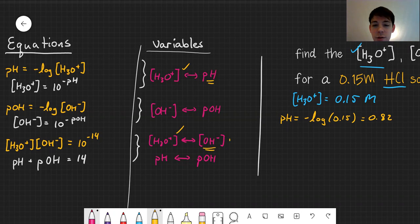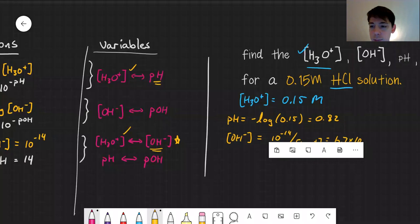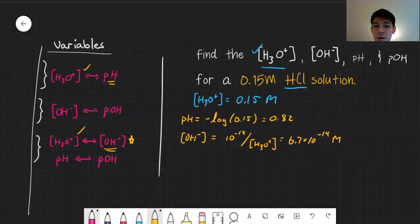Next, I'm going to use this expression. Knowing hydronium, I can find OH minus. I'm going to rearrange it to solve for OH minus, so it comes out to be 10 to the minus 14 over hydronium, or 6.7 times 10 to the minus 14.